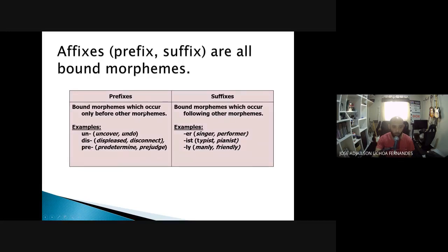So we have a chart here with the prefixes. Prefixes are bound morphemes which occur only before other morphemes, whereas suffixes are bound morphemes which occur following other morphemes. For example, the final 'er' for the performer of the action: singer, teacher, performer, etc., the 'ist' as in typist, pianist, or the 'ly' in the adverbs mainly, friendly, and so on.